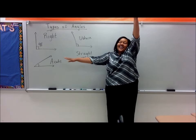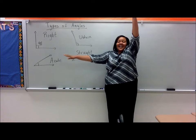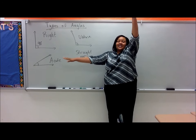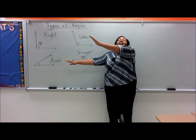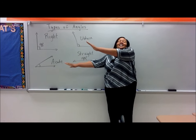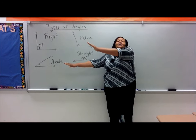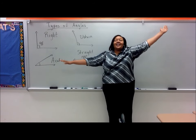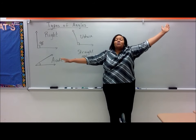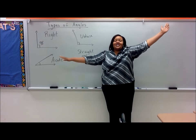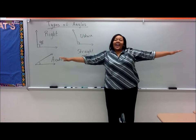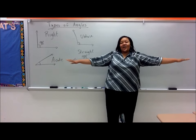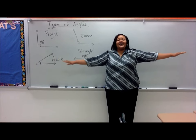Right angle, it is 90 degrees. We say acute angle, less than 90 degrees. We say obtuse angle — it's more than 90 degrees. And a straight angle is 180.